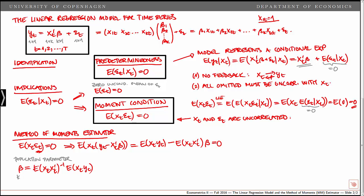Note that beta is a k by 1 vector. We have a k by 1 multiplied by a 1 by k matrix, which must be non-singular for us to be able to invert it — that rules out perfect multicollinearity in the x variables. We have k by 1 multiplied by 1 by 1, so together these are k by 1. We are then multiplying a k by k matrix with a k by 1 vector, giving us a k by 1 vector, so the dimensions match.